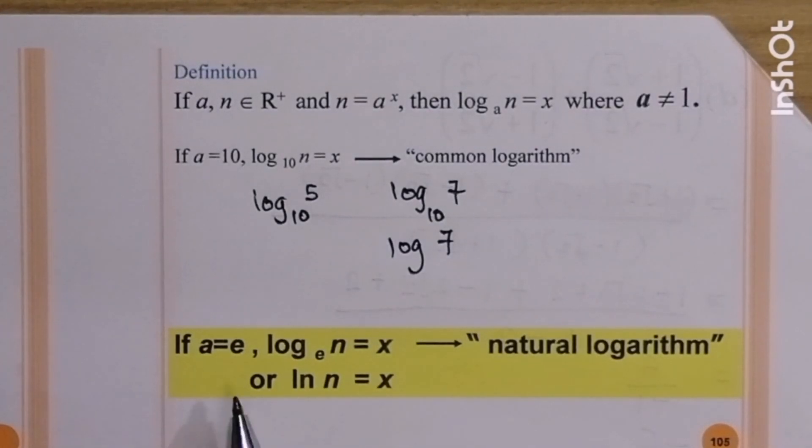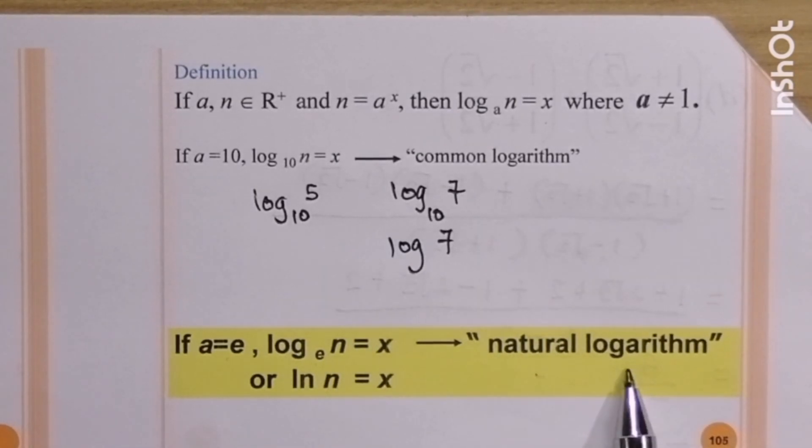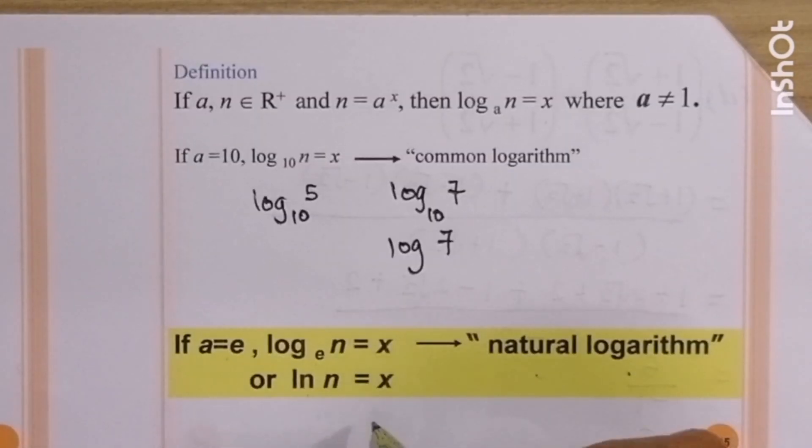If a equal to e, we get log n base e equal to x. For log base e, we call natural log. Or we just write ln n equal to x. For example, log e 7, we can write ln 7.